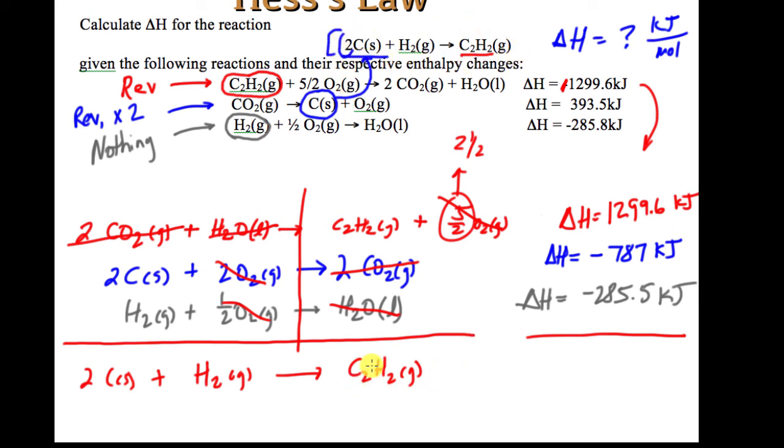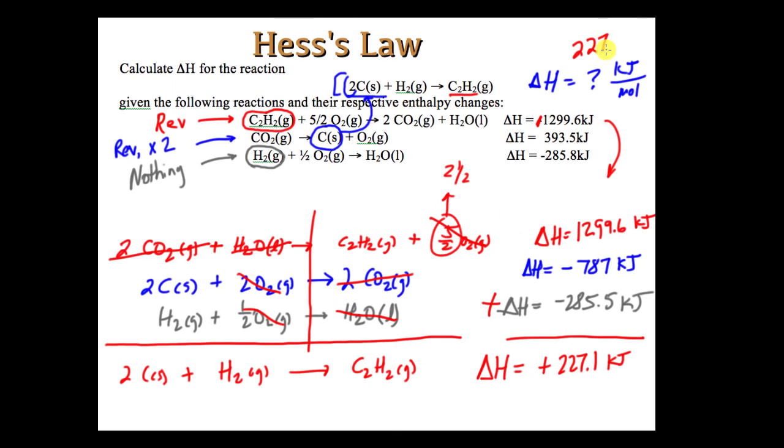Hess's law says if that's true, when I sum up these steps, all I need to do is sum up all of my changes in enthalpy. And when I do that, I end up with a positive 227.1 kilojoules. So that would be the energy, 227.1 kilojoules.